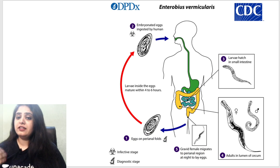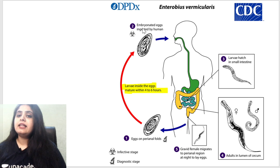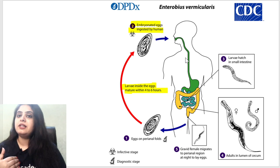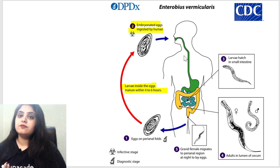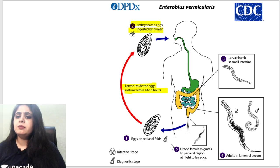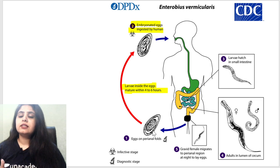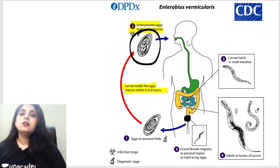The eggs can be passed out into the stool sample. The larva develops inside the eggs, and then the embryonated eggs containing the larva can be consumed via contaminated food and water, completing the cycle. So the gravid female lays eggs in the perianal region, those come out into the stool, larva forms inside, and we ingest them.